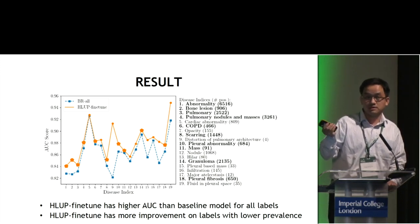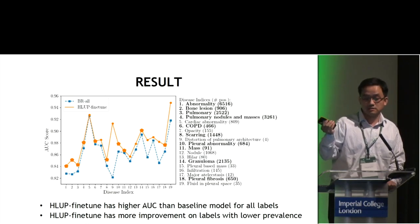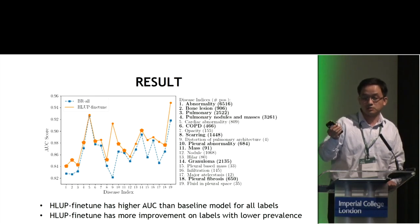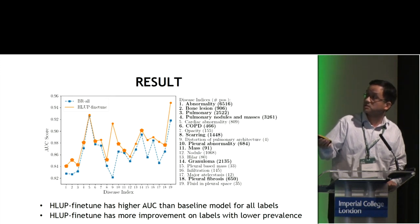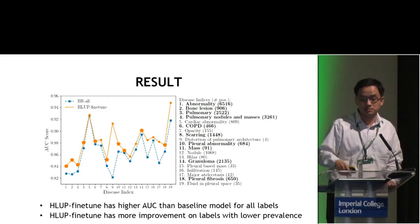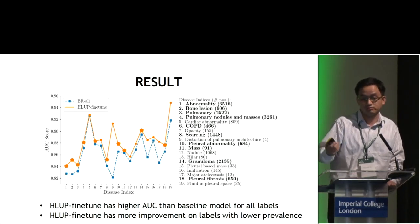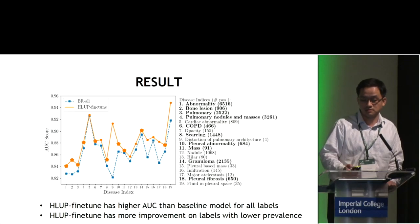Our final result actually finds more improvements on labels with lower prevalence — for example, disease number 9 and disease number 17, which have only 10 images in the test set from the PLCO dataset.